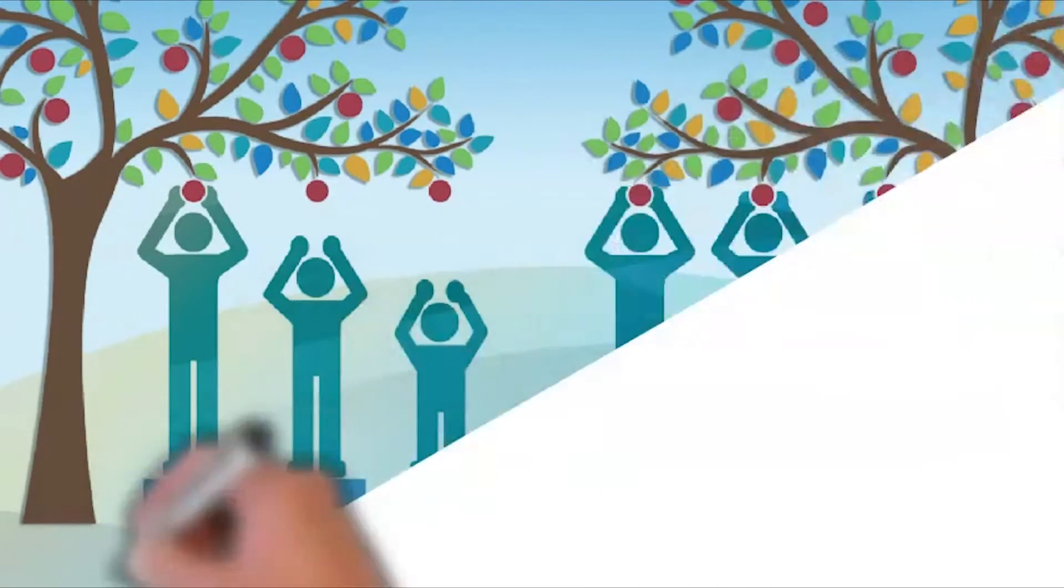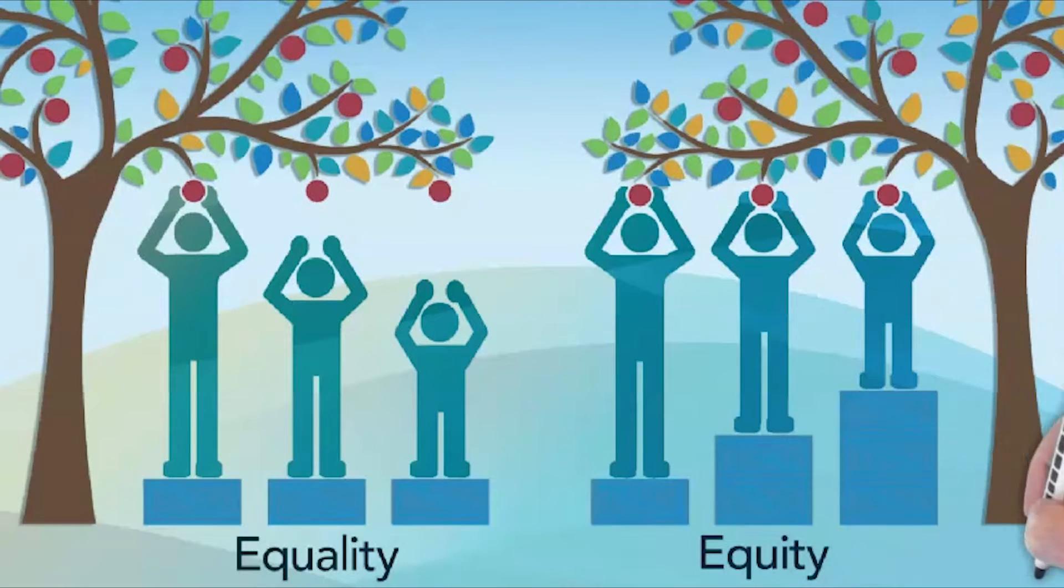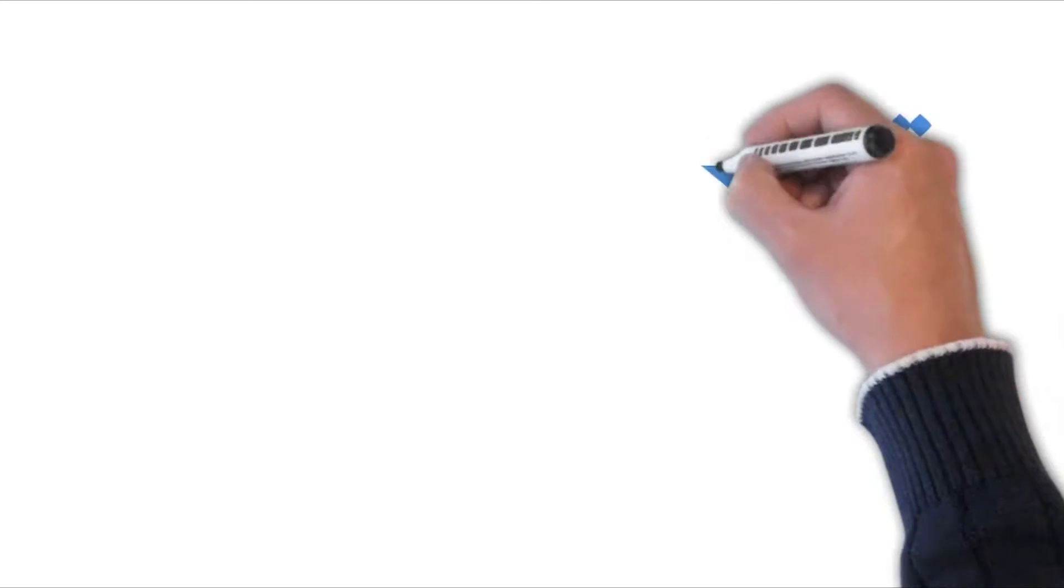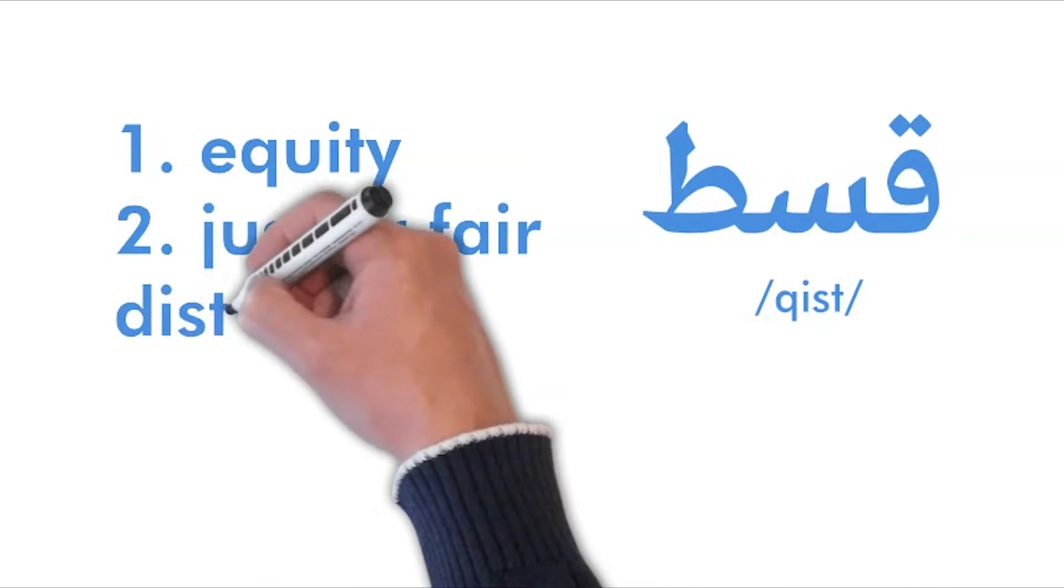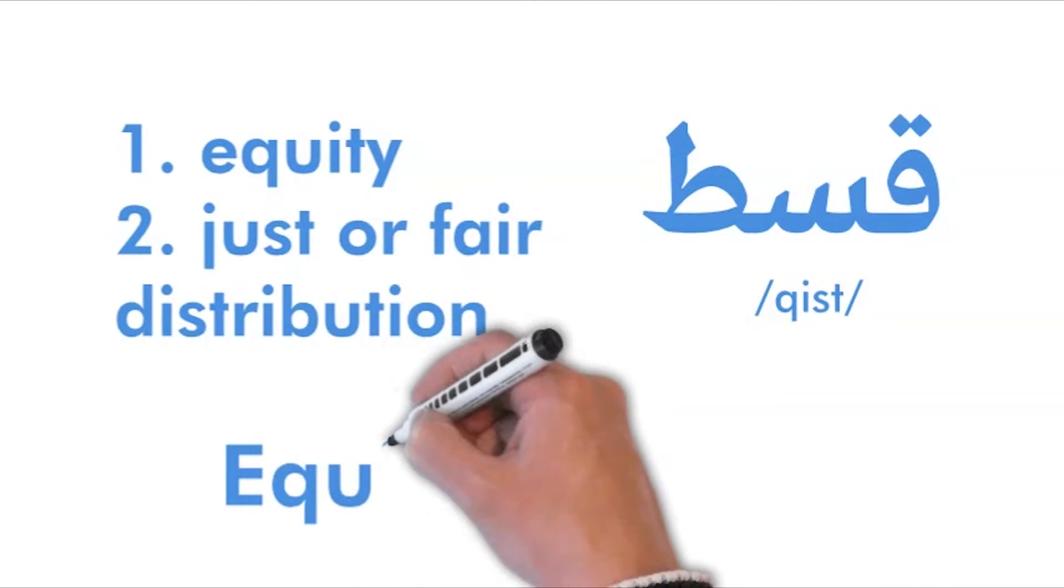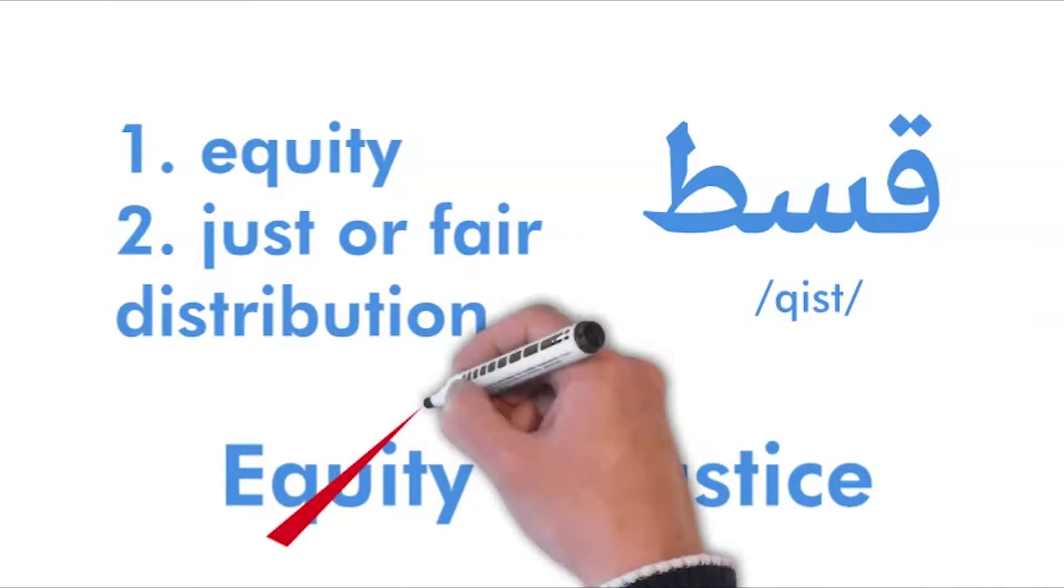Many societies in our current world value the principle of equality. However, beyond just equality, Islam values the principle of equity. The Qur'an uses the term qist for equity. However, qist can also be translated as just or fair distribution. In this case, equity is both tied to justice and fairness as a necessary prerequisite.